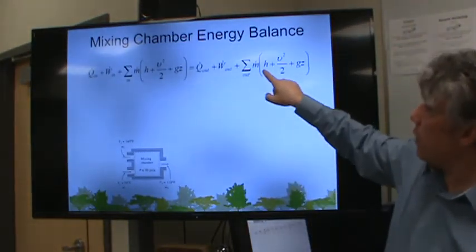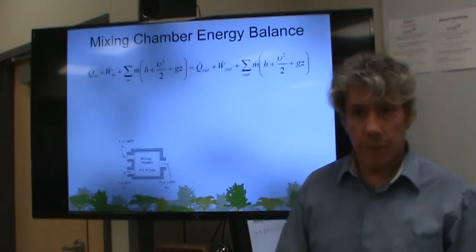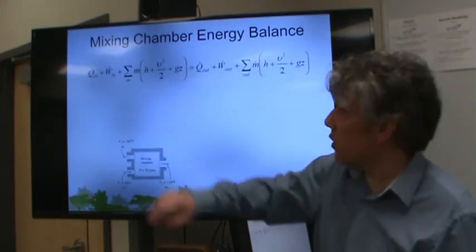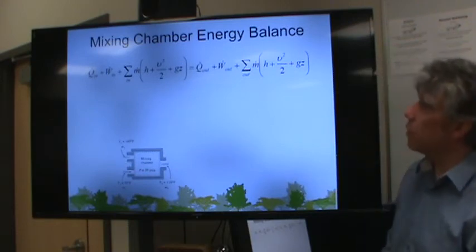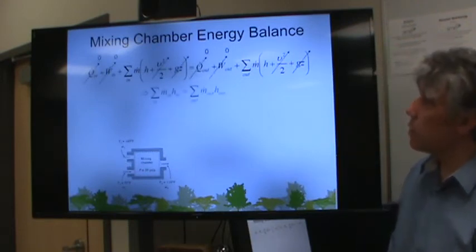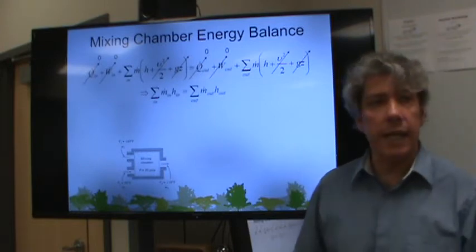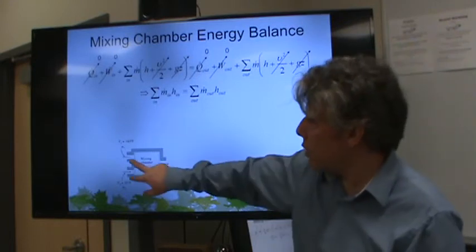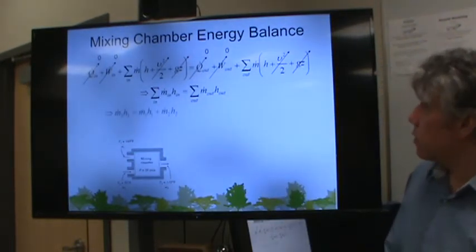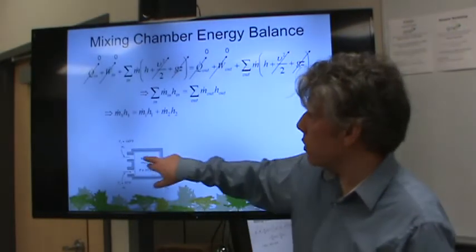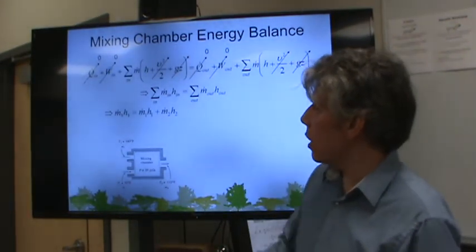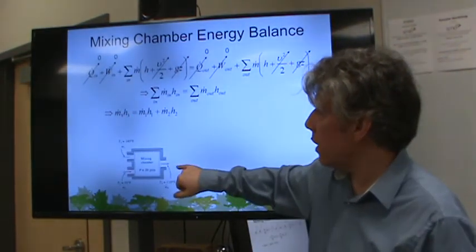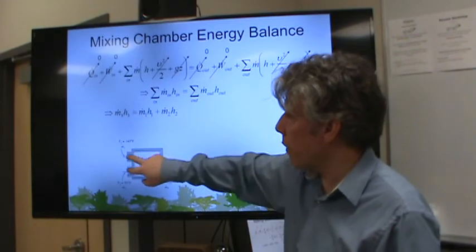The fluid coming out would have higher enthalpy because of the work we put into it. You guys are getting good at this. I'm proud of you. But I think we've discussed all these terms and decided that the heat flow and workflow terms as well as the kinetic and potential energies would go away. And this begins to look a lot like the throttling valve from the last slide. The only difference is that now we have two entrances and one exit.